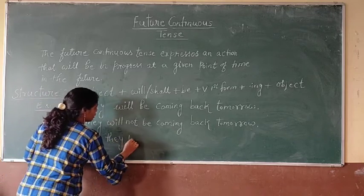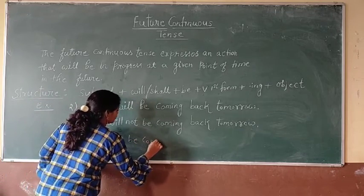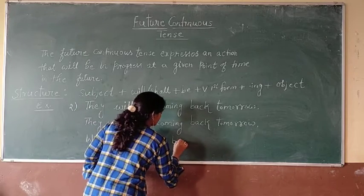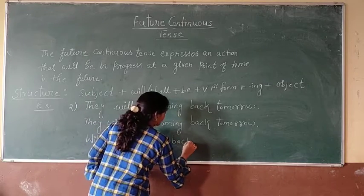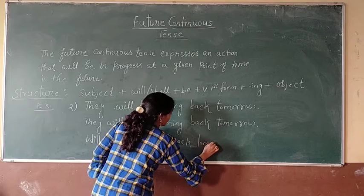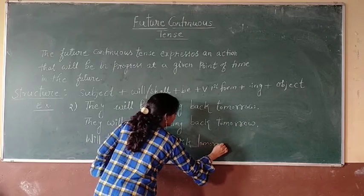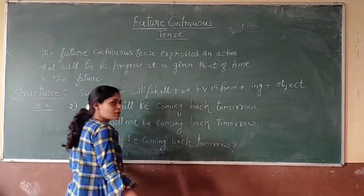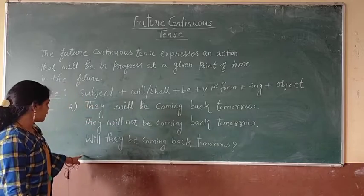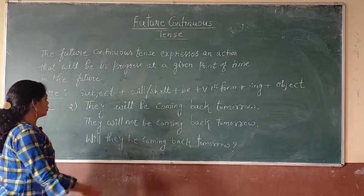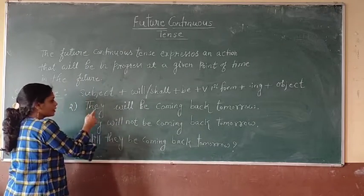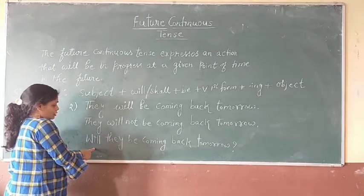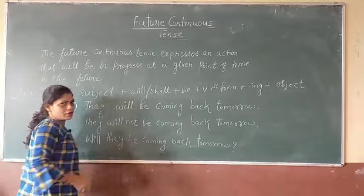For the interrogative: will they be coming back tomorrow? And at last we add a question mark because this is an interrogative sentence. So this is the affirmative sentence, this is the negative sentence, and this is the interrogative sentence.